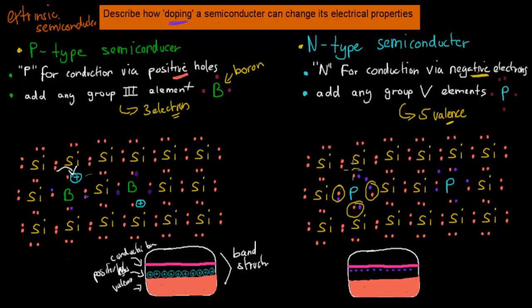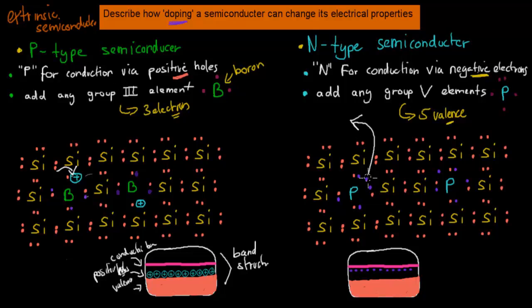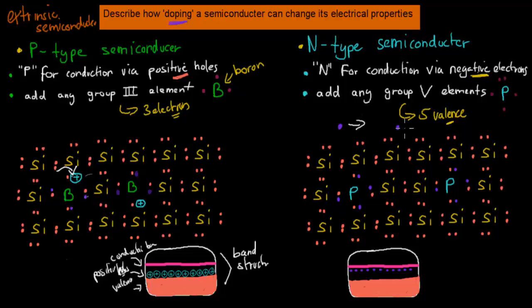When we add phosphorus into the silicon structure, because phosphorus has 5 electrons, it makes bonds with the neighboring silicons — 2 being shared on each side — so everyone has all their 8 electrons. But there is an extra electron left over. What happens to this extra electron is it very quickly moves into the conduction band. These extra electrons have very similar energy levels to conduction electrons and can conduct electricity once they're there.